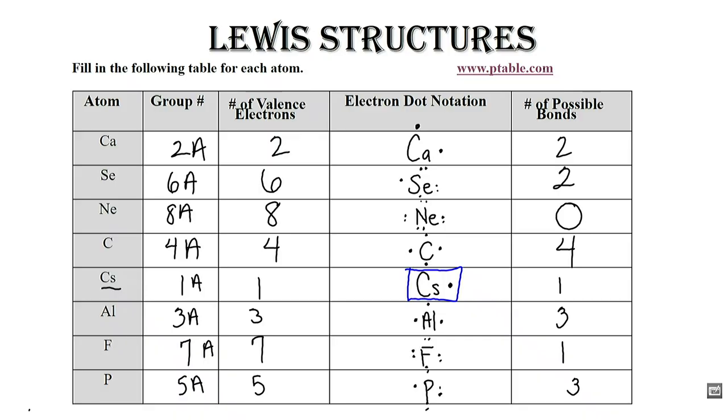Aluminum is in group 3A, it has three valence electrons, and in its structure we can see the three valence electrons in aluminum and it is capable of making three bonds.